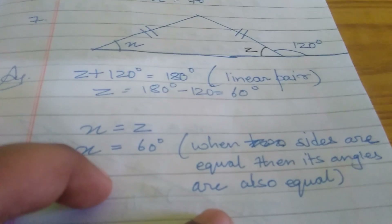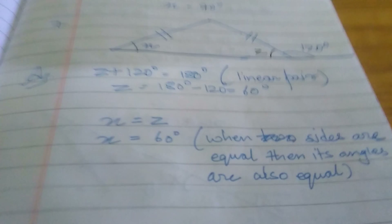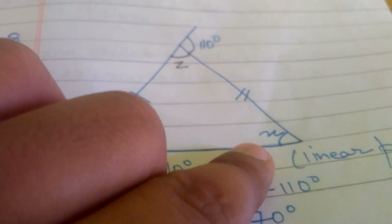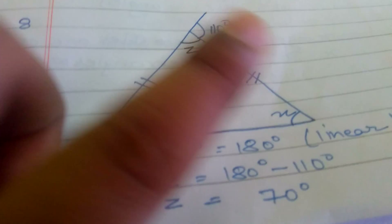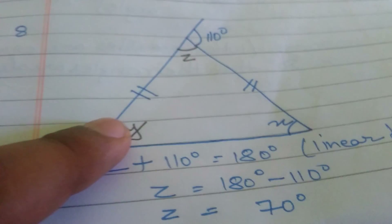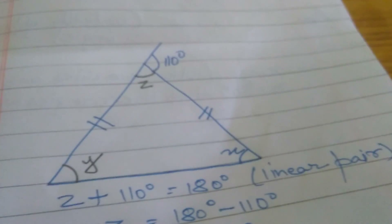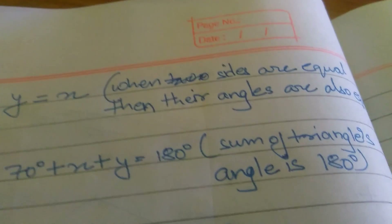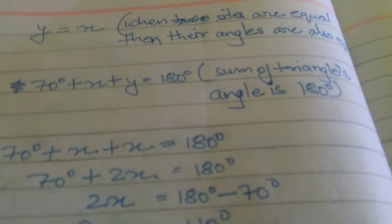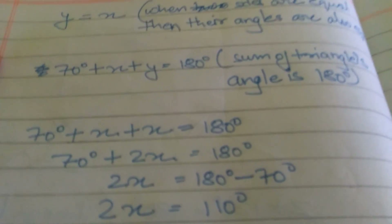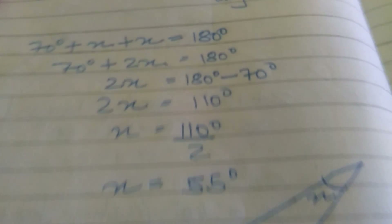Here is X and here is 110 degrees, and these two sides are equal. I take Y and Z as additional. Z plus 110 equals 180, so Z equals 70 degrees. Y is equal to X because when sides are equal, their angles are also equal. We know the sum of a triangle's angles is 180, so 70 plus X plus Y equals 180, and solving gives X equals 55 degrees.